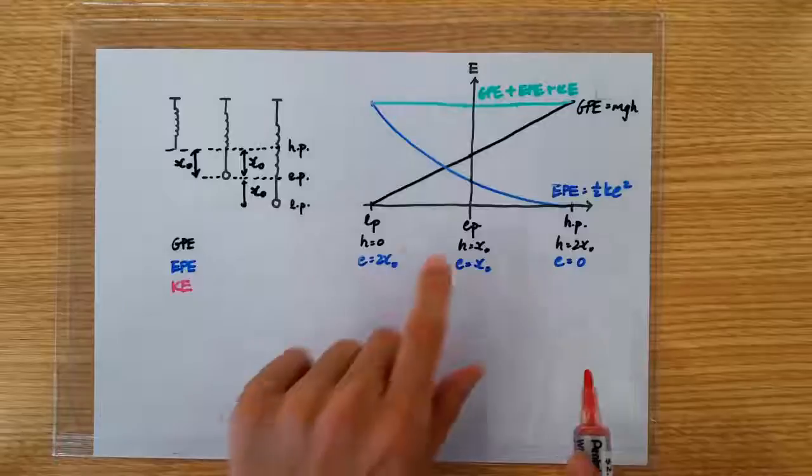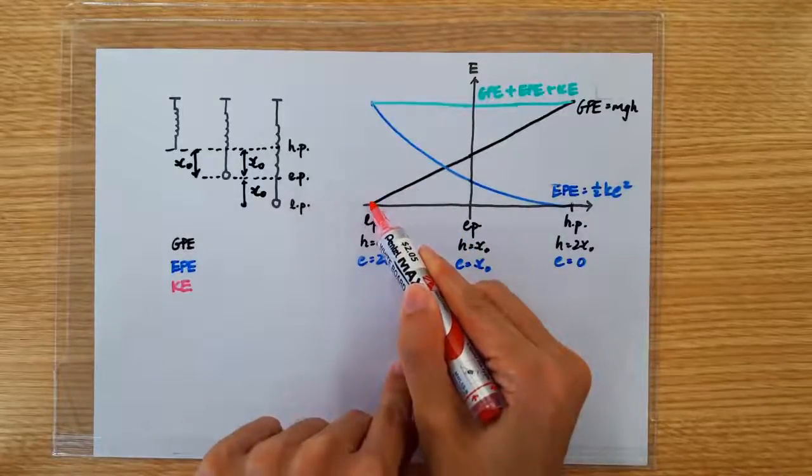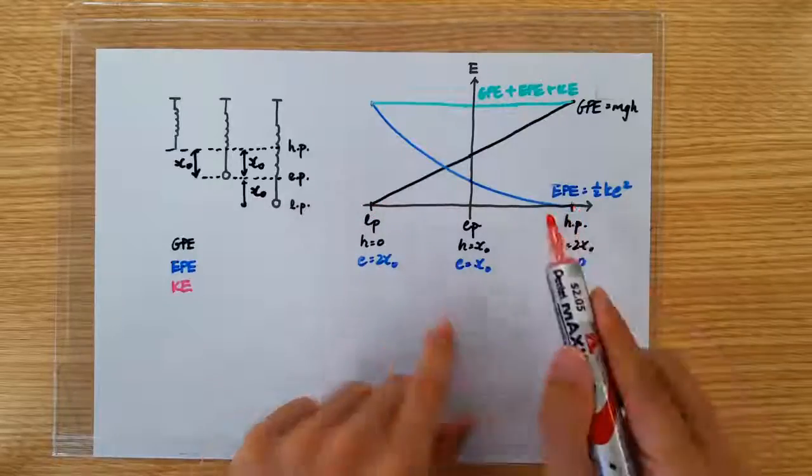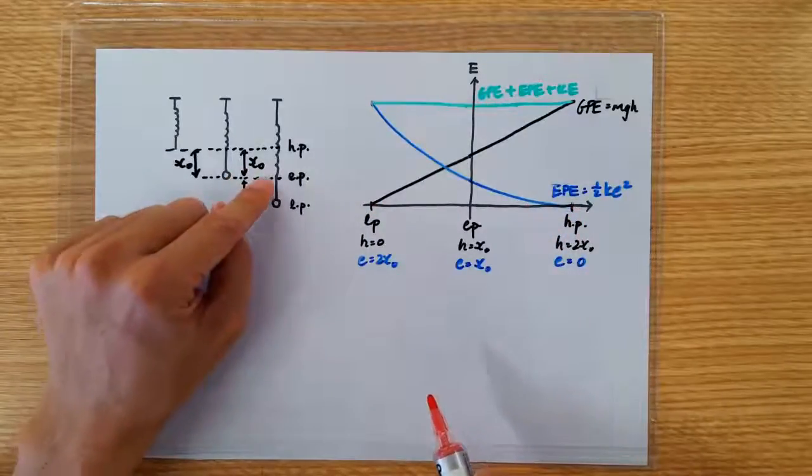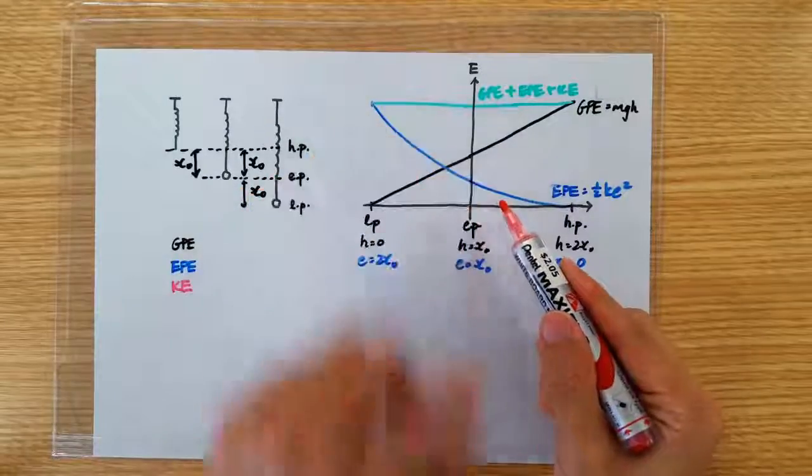Okay, now let's get back to the kinetic energy. So as I said, the KE should be 0 here and here. And we know that the KE should be maximum at the equilibrium position. But how much KE should we draw in our graph?